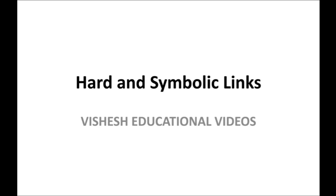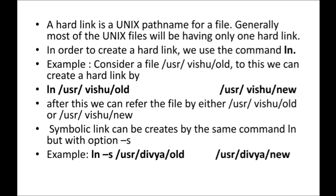A hard link in UNIX is nothing but a path name for a file. When you create a file in UNIX, the path name will be generated. For example, I'm creating a file 'vishu' — that is the name of the file present in the user directory. The path name is separated by a slash. Whenever you create a file, the path name will be generated for that file. Most UNIX files will have only one hard link — that means for every file there will be a path name.